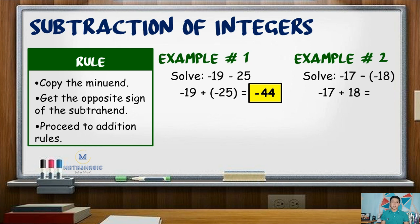Then we proceed to addition. We now have unlike signed integers being added, so we subtract the values: 18 minus 17 is 1. Since 18 has a greater absolute value, we copy the sign of 18, which is positive. The difference is positive 1.